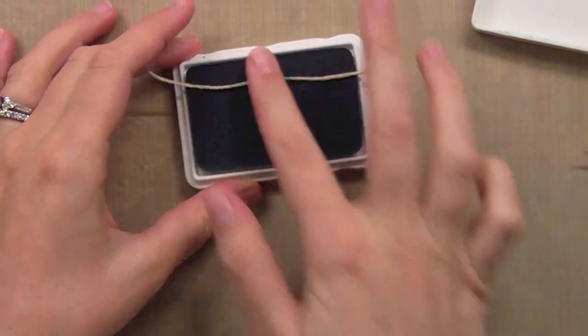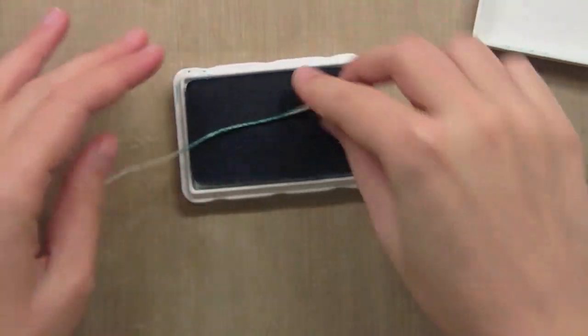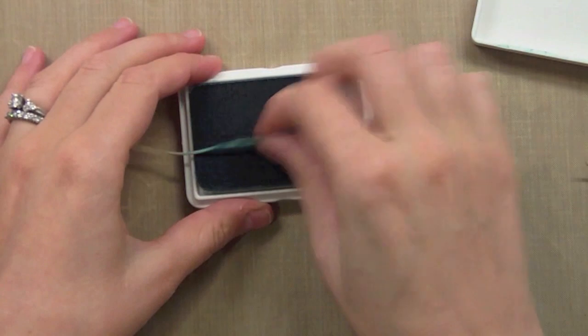So right here, I'm actually just taking, this is just a basic dye ink pad, any old dye ink pad. And I'm just going to run it on the ink pad, just like this with my fingers. And what's great about this is the texture of the twine comes through and you get a really cool look with it.